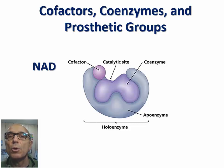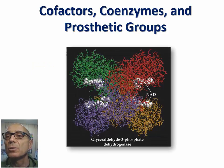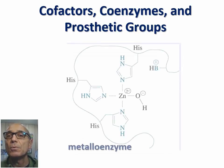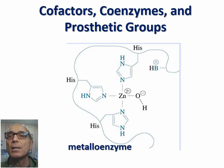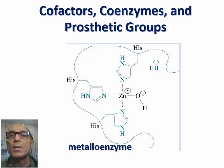An example of such a coenzyme is nicotinamide adenine dinucleotide, or NAD, which acts as a cofactor for the enzyme glyceraldehyde-3-phosphate dehydrogenase, or GAPDH. And lastly, prosthetic groups, which are organic or inorganic components that are permanently bound to the protein portion of the enzyme. Removal of a prosthetic group from an enzyme causes the denaturing of the enzyme. An example of enzymes with prosthetic groups are metalloenzymes, which contain firmly bound metal ions — such as zinc or iron — at the active site of the protein portion of the enzyme.